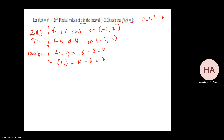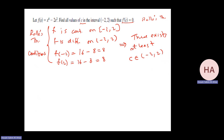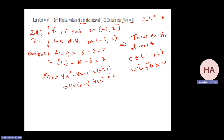This implies there exists at least one c in the open interval (−2, 2) such that f prime at c equals 0. Finding f prime: 4x cubed minus 4x, which factors as 4x(x minus 1)(x plus 1), set equal to 0. So x equals 0, x equals 1, and x equals −1, all in the interval (−2, 2). The theorem says at least one — here we have three c's.